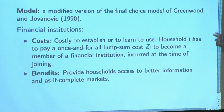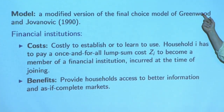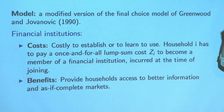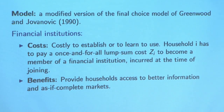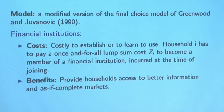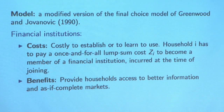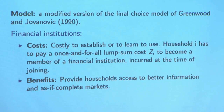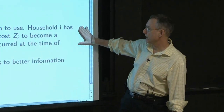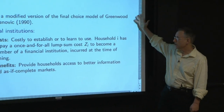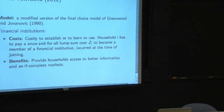The Greenwood-Jovanovich model assumes that the benefit of being in a financial institution is better information and risk sharing. So here we are looking at the data to see if that's a good assumption — actually, institution by institution. There is a direct, immediate link of this micro work with those macro models. Even if we reject, it should inform what we assume within those macro models. In Greenwood-Jovanovich, there was a cost to joining the financial system — we're going to let this be a household-specific cost.